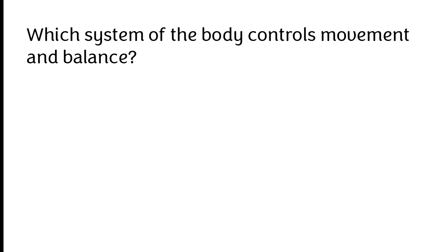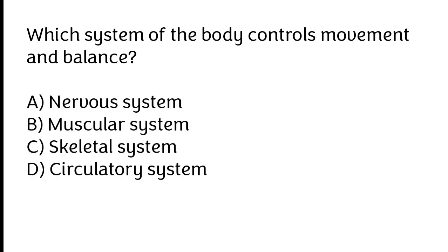Which system of the body controls movement and balance? Nervous system, muscular system, skeletal system, circulatory system. The correct answer is option A — the nervous system controls movement and balance.